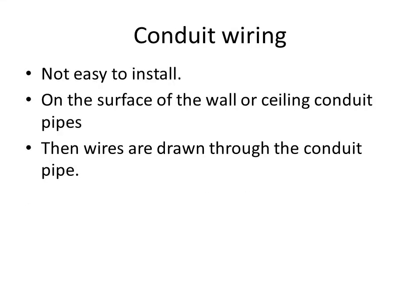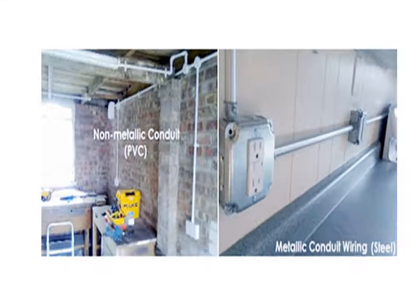Next is conduit wiring. There are two types: surface conduit wiring and concealed conduit wiring. In surface conduit wiring, conduits are fixed on the wall with a saddle and wires are drawn through the conduits. The diagram shows two types — PVC conduit on the left and metallic steel conduit on the right.